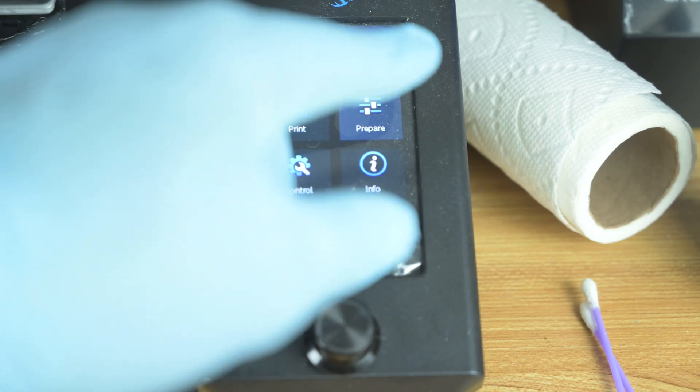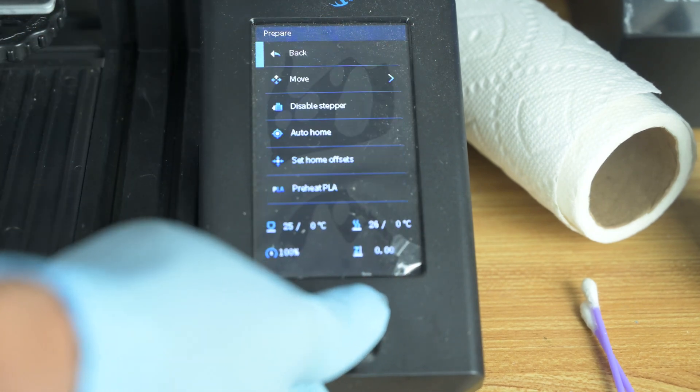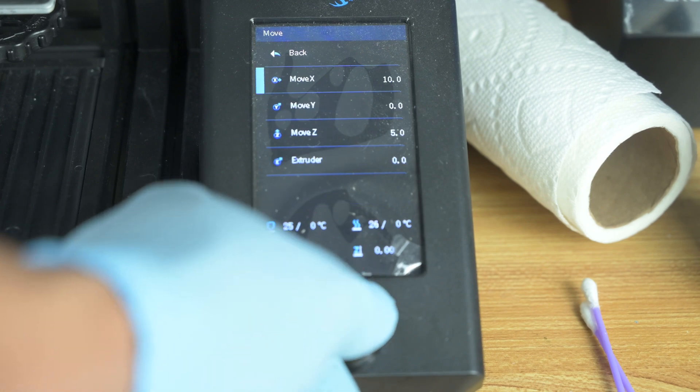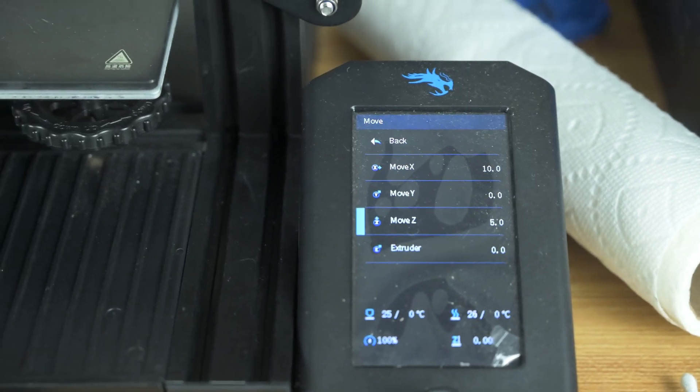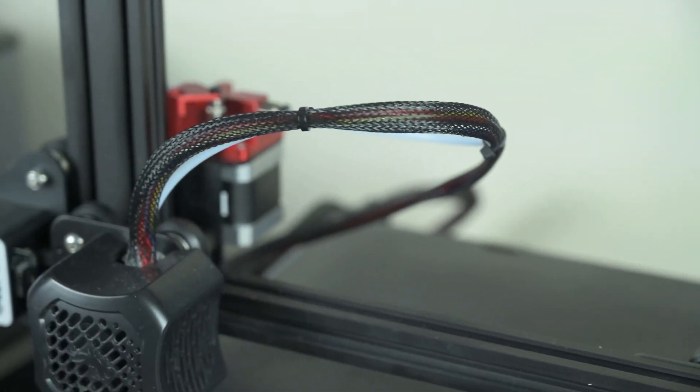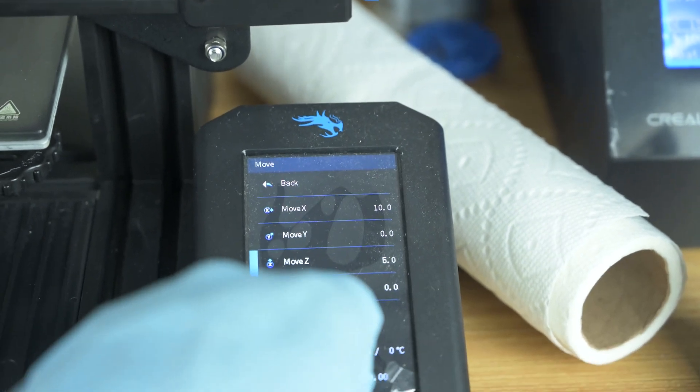And just in case you guys were wondering how you move the Z-axis, we just go over here to prepare. Then we go to move Z-axis. As you guys can see, it's on Z there, the extruder and the gantry all the way down.